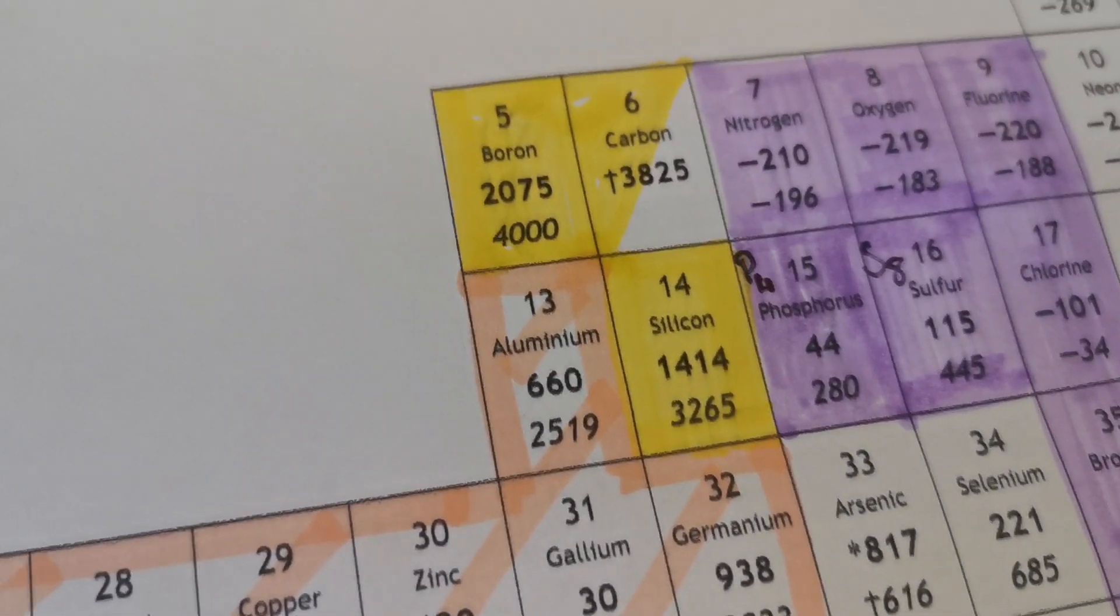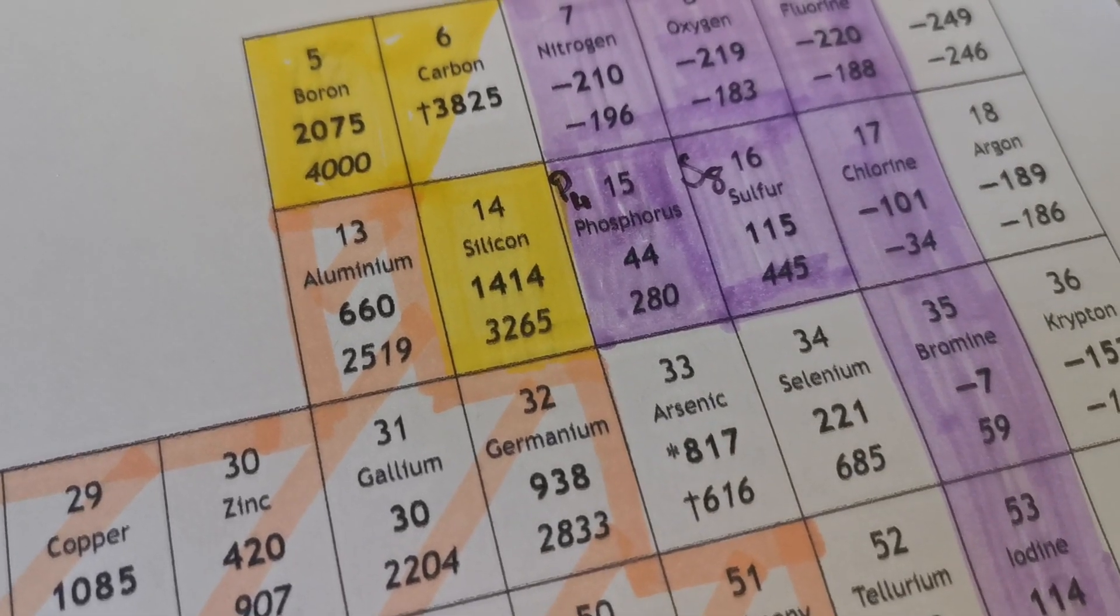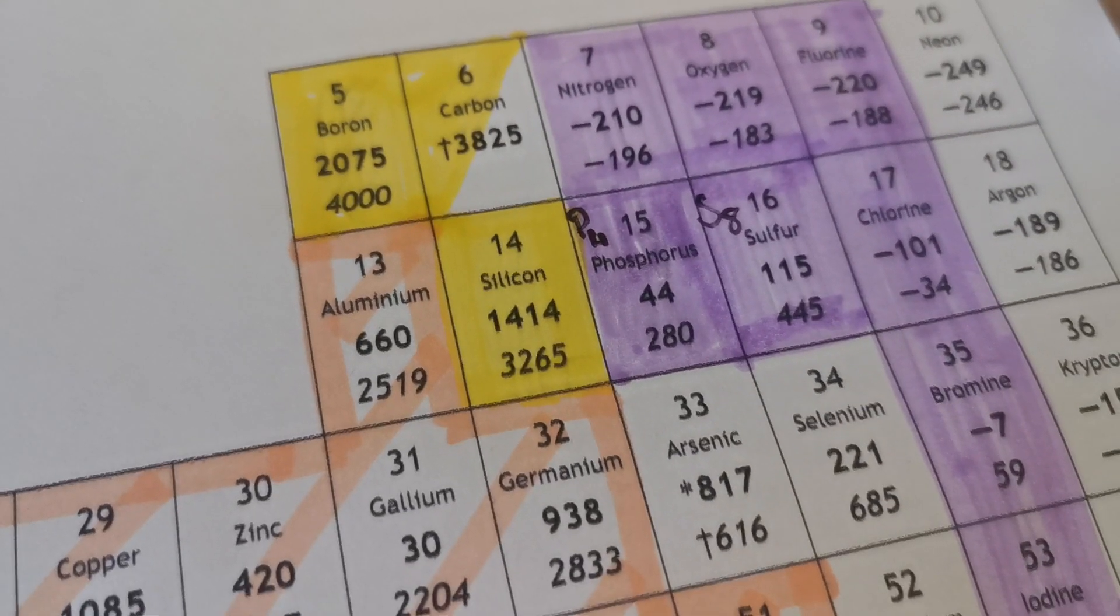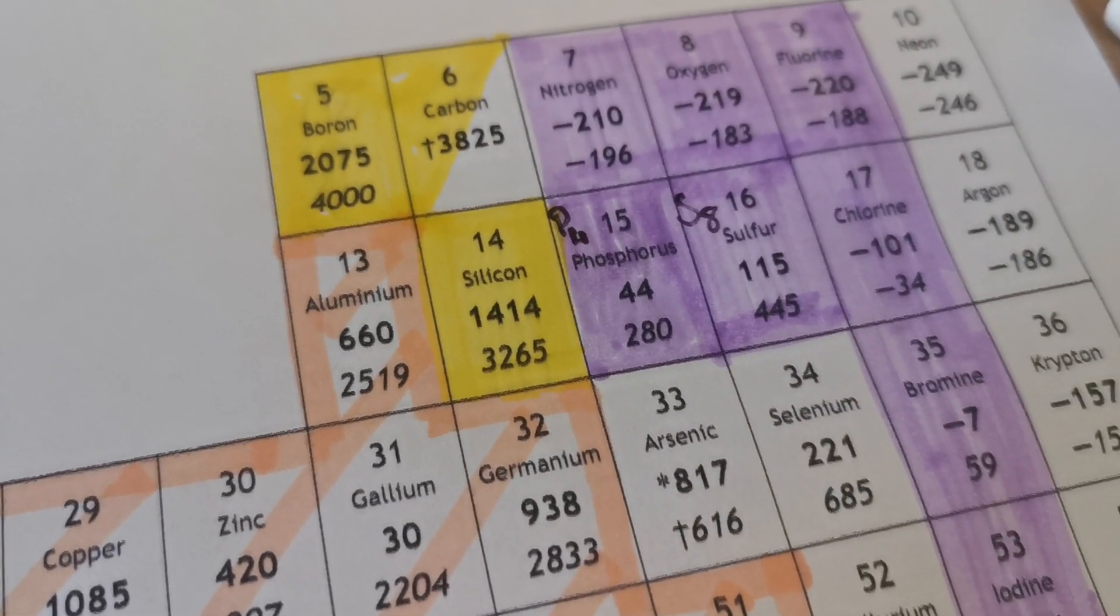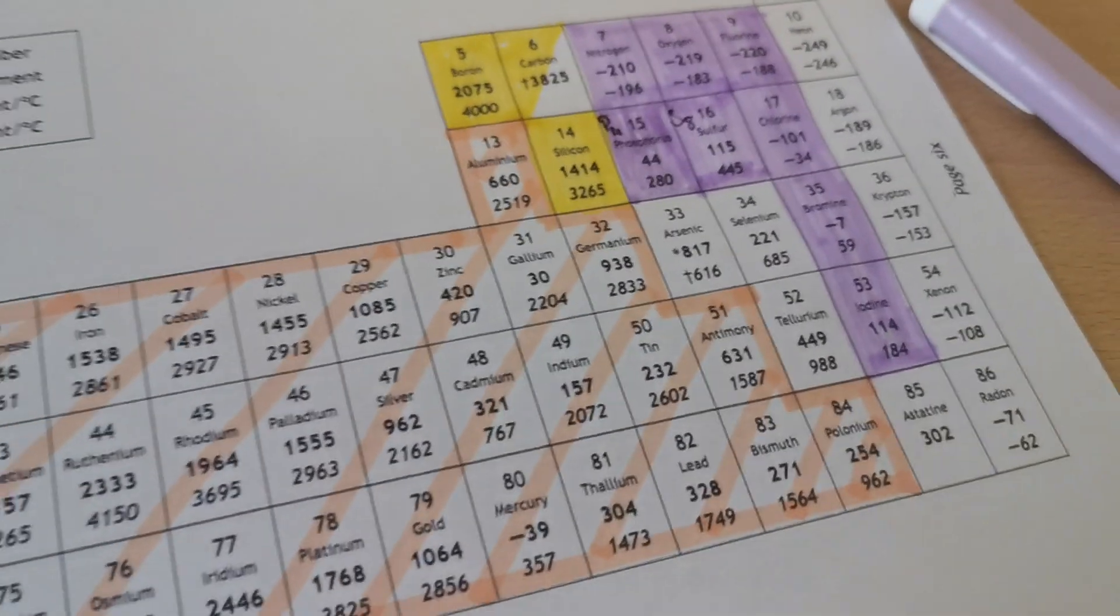We've got P4 for phosphorus, S8 for sulfur. We'll use that later on when we start to look at how these structures affect their melting and boiling points and things like that.